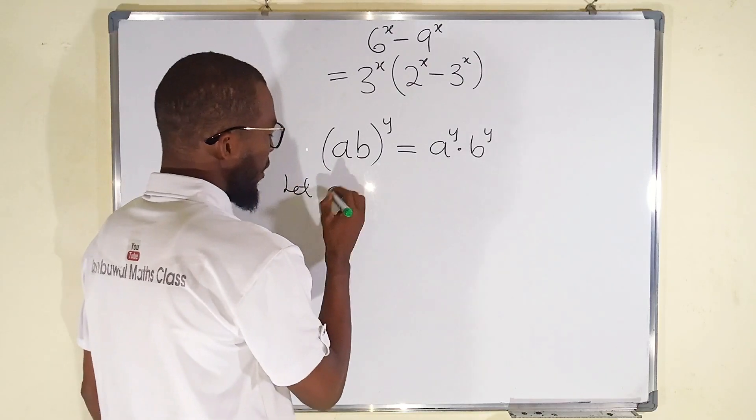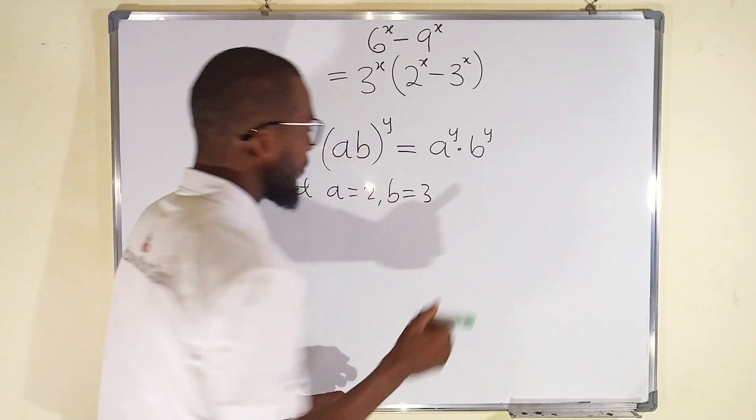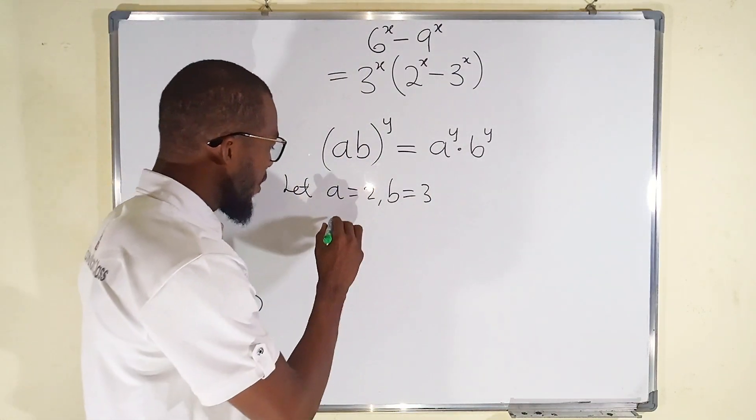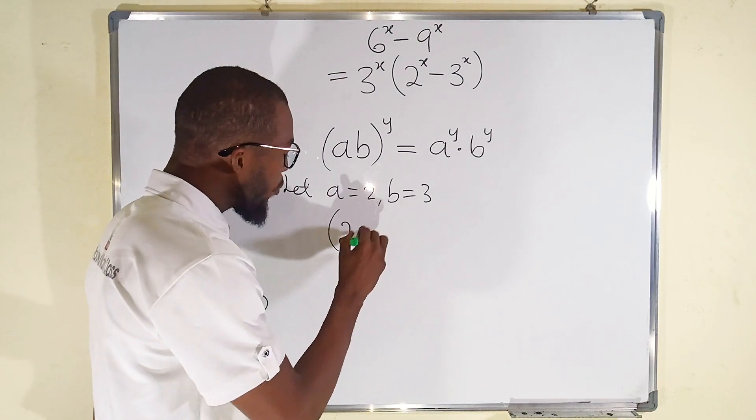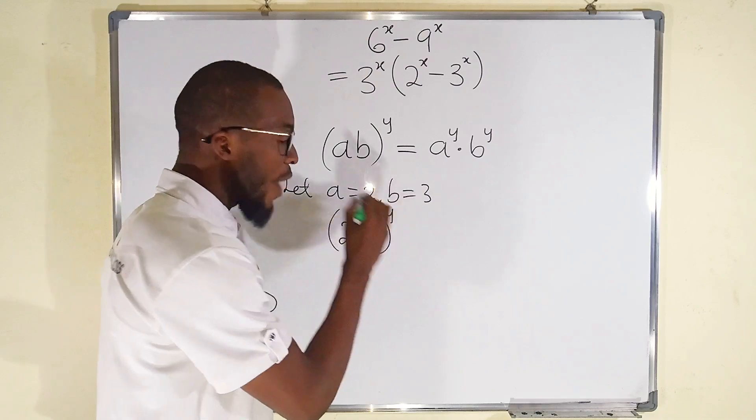Let a equal 2 and b equal 3. So wherever we see a, we write 2, and b equals 3. So this is 2 multiplied by 3 raised to the power of y, right?